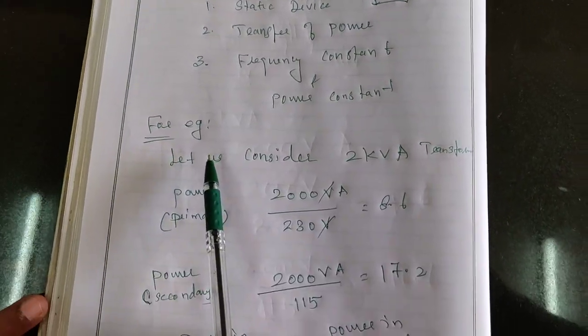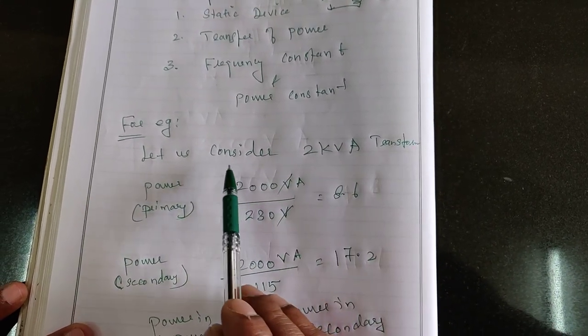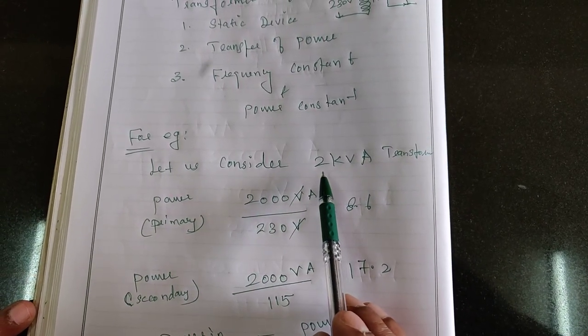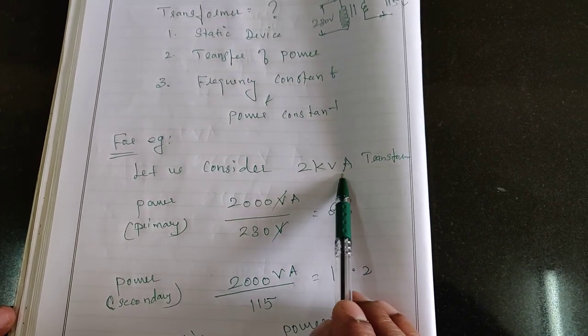For example, I told you that the power is constant. Let me tell you by proof. Here, I am considering a 2 kVA transformer. It is the rating of the transformer is given in kVA.